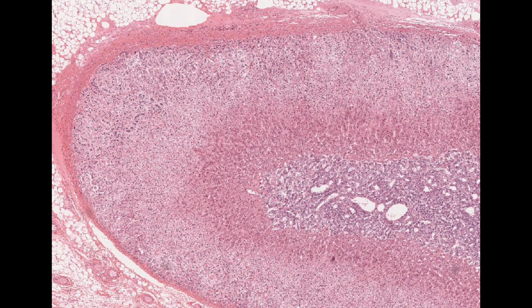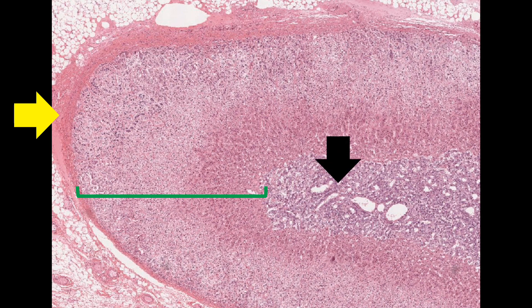This slide shows a cut section of the adrenal gland. This is the capsule, this is the adrenal cortex, and this is the adrenal medulla. Let us discuss the adrenal cortex and adrenal medulla one by one.